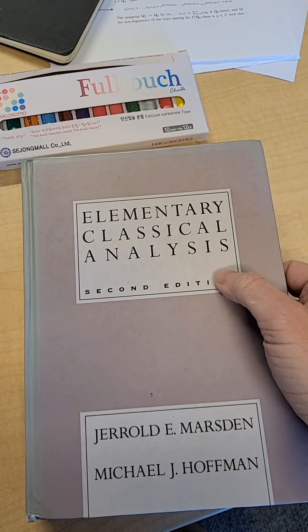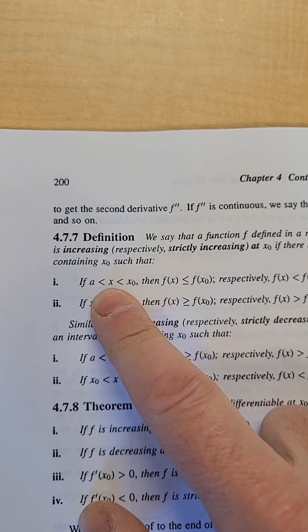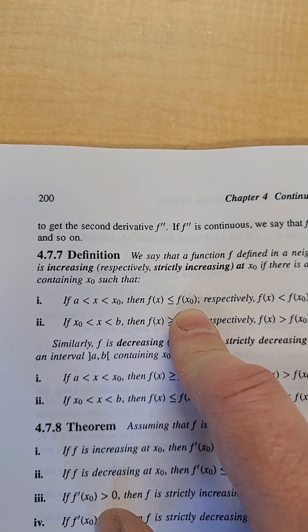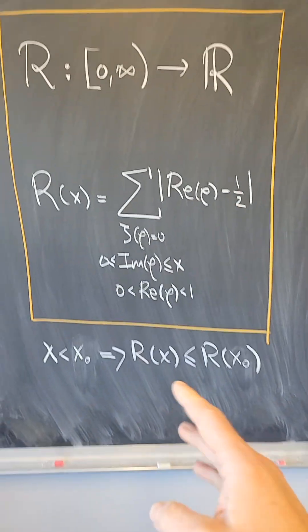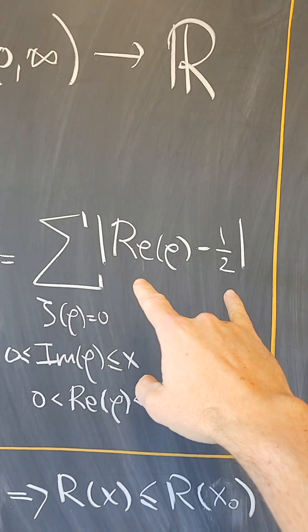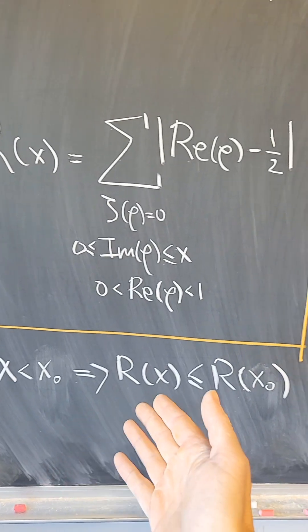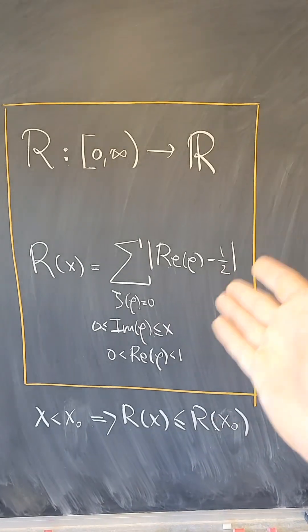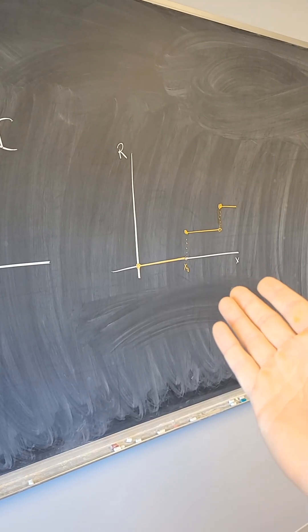And now we go to a classical book in analysis and look up the definition of increasing function, which is simply that if x is less than x zero, then f of x is less or equal to f of x zero. Which happens for this function because these are non-negative contributions. So we always have that R of x is less or equal to R of x zero. So this is an increasing function, and therefore, the Riemann hypothesis is false.